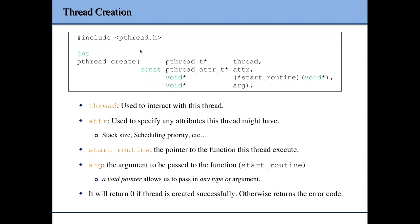With the pthread library we can use the pthread_create function to create new threads. This function takes four arguments. The first one is the thread handle, which is a pointer — the function will store the return value in this variable. When you create a new thread, the library will assign an ID to that thread and store the ID in this argument.